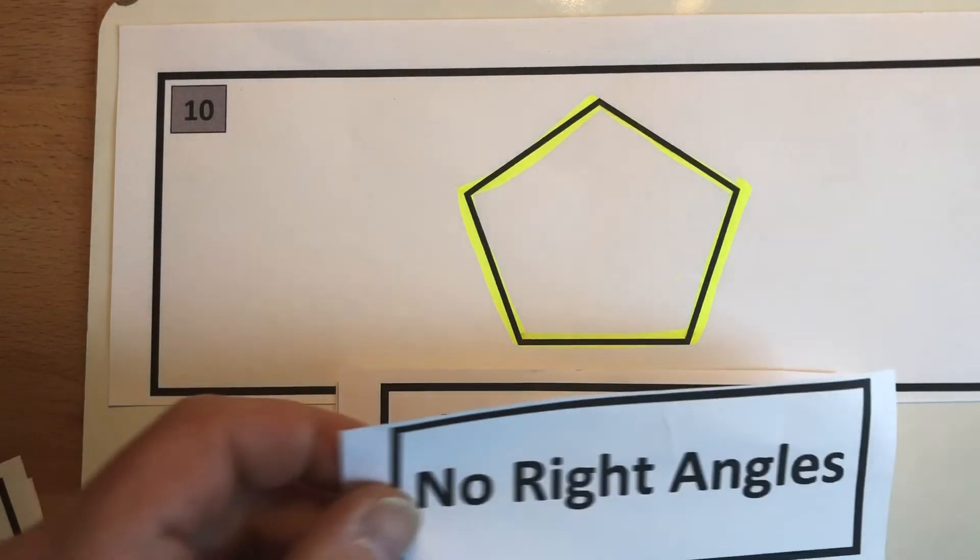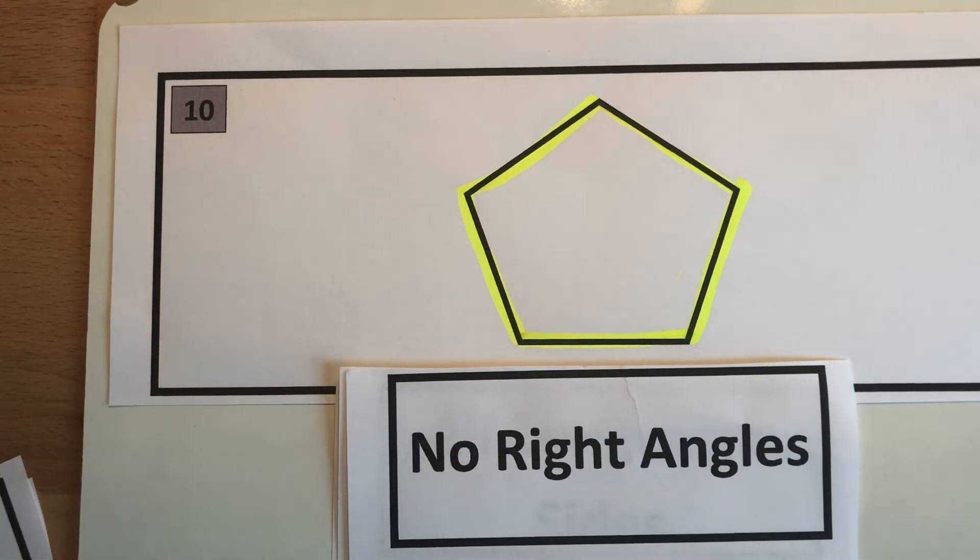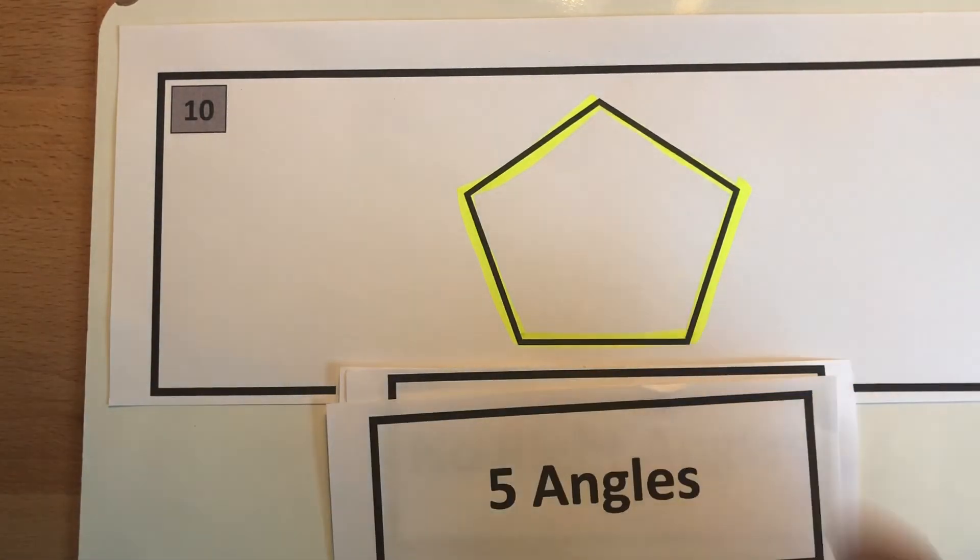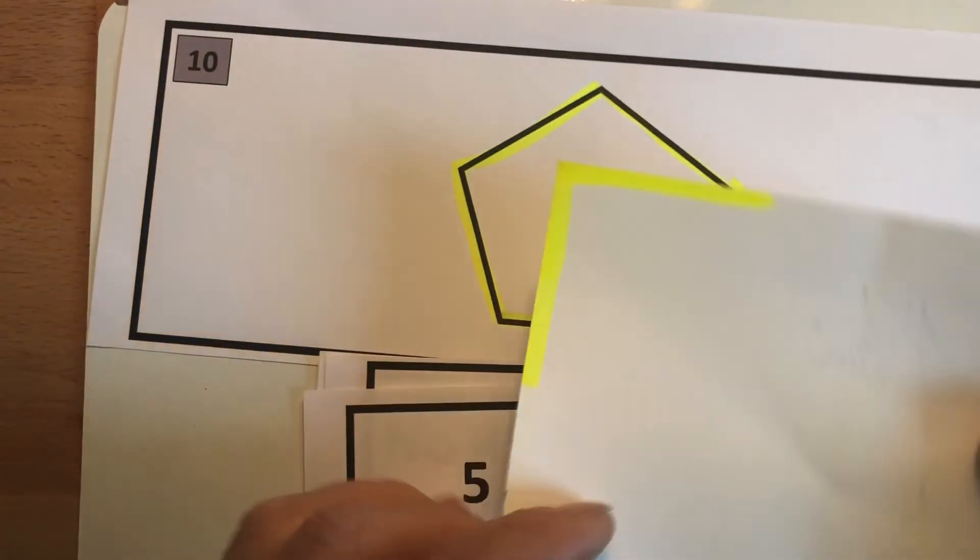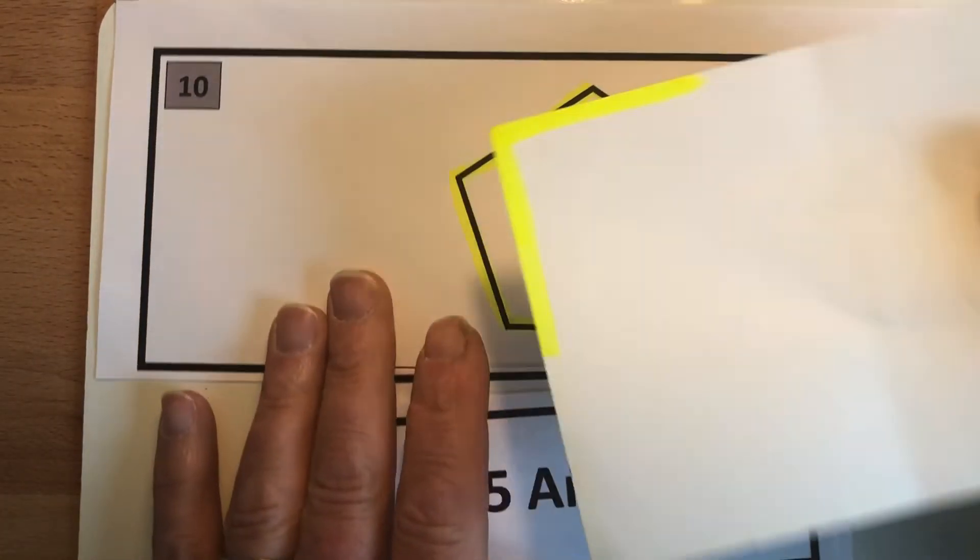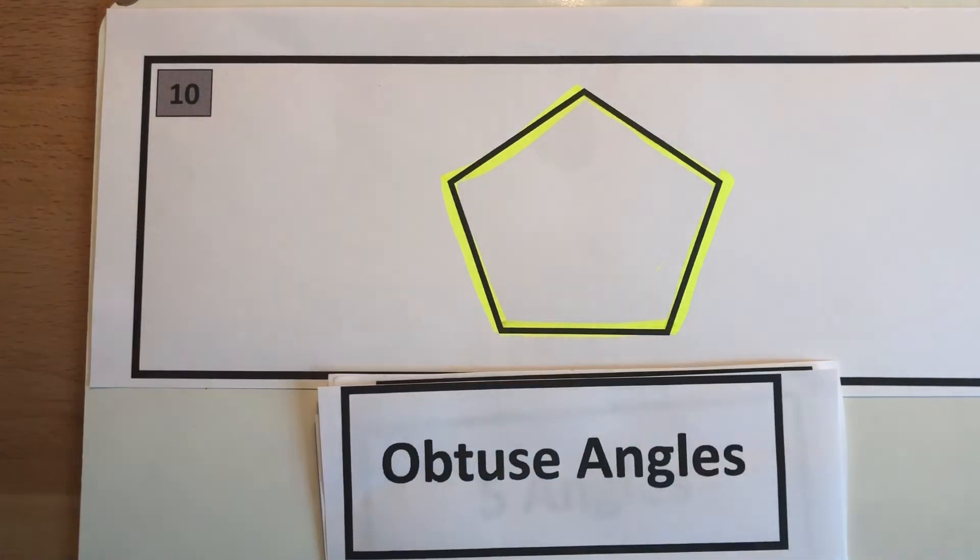You probably said that there are no right angles, right? So you can categorize things as what it doesn't have. You also maybe said it has five angles. And if you look closely at those angles, I've got my right angle tool out and those angles are all greater than right angles so they're all obtuse angles.